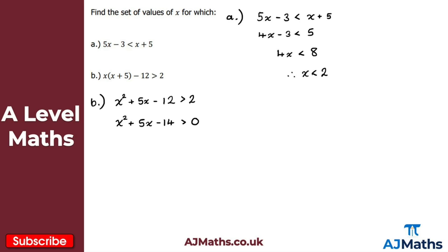Once we have a quadratic greater than or less than zero, we factorize it. Thinking of it as an equation equal to zero: we need two numbers that multiply to give -14 and add to give +5. That gives us +7 and -2, so we get (x + 7)(x - 2) > 0.